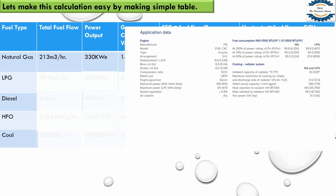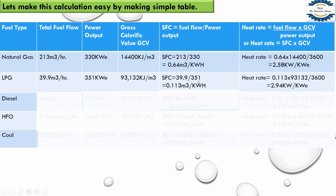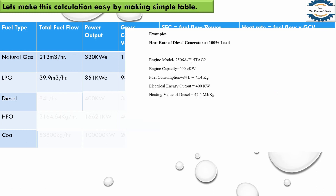For LPG, I have taken an LPG power plant. At 100% power rating, LPG consumption is 39.9 cubic meters per hour and its power output is 351 kilowatt. The GCV of LPG is 93,132 kilojoule per cubic meter. Similarly, for specific fuel consumption we divide fuel flow by power output, and for heat rate we multiply specific fuel consumption by GCV and divide by 3,600.